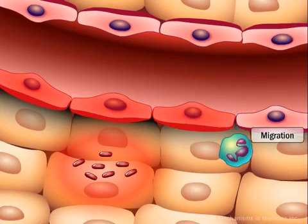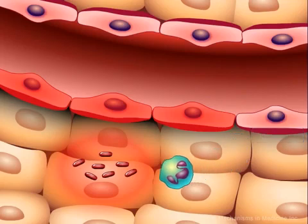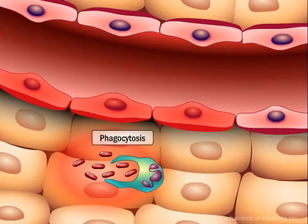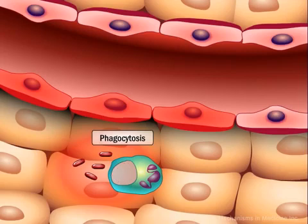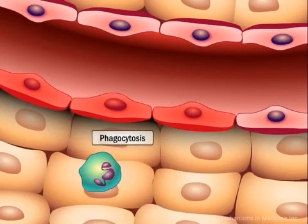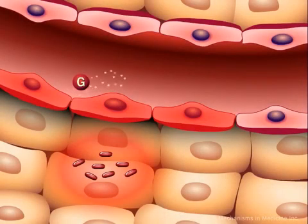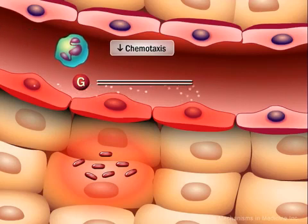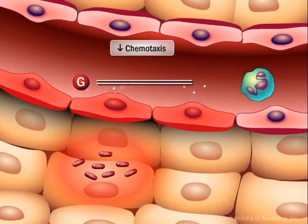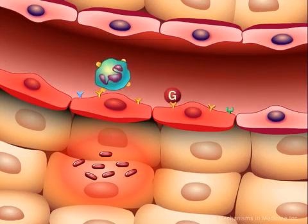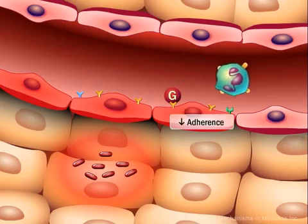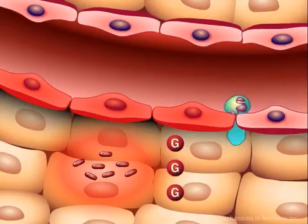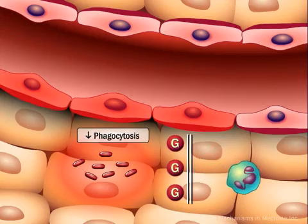Following adherence, the neutrophil migrates into the subendothelial tissue to reach the site of infection, engulfs the bacteria, and eliminates them via breakdown within the phagosomes — a process known as phagocytosis. In states of hyperglycemia, chemotaxis is reduced, adherence is also adversely affected, and phagocytosis is also impaired.